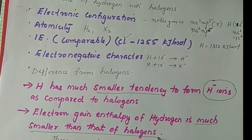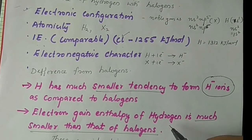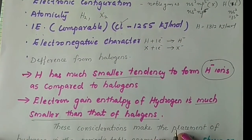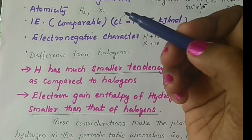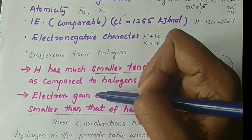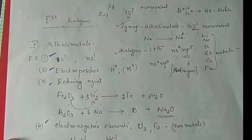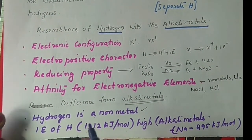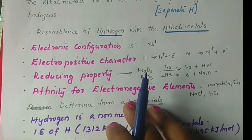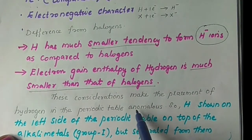The difference between hydrogen and halogens is that hydrogen's electron gain tendency is smaller than that of halogens, and correspondingly its electron gain enthalpy is smaller. These considerations — the similarities with alkali metals, similarities with halogens, and the differences — make the placement of hydrogen in the periodic table anomalous.